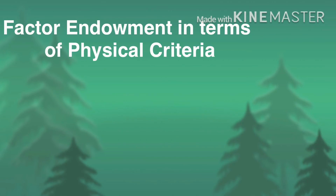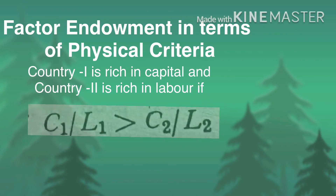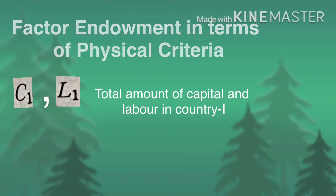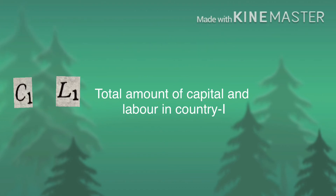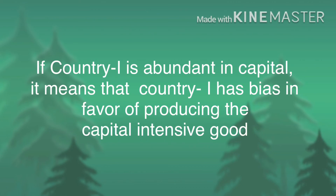Using the physical definition, we say that country one is rich in capital and country two is rich in labor if C1/L1 > C2/L2, where C1 is the total amount of capital in country one, L1 is the total amount of labor in country one, and C2 and L2 are the total amounts of capital and labor respectively in country two. We will now show that if country one is abundant in capital according to this definition, it implies that country one has a bias in favor of producing the capital-intensive good.